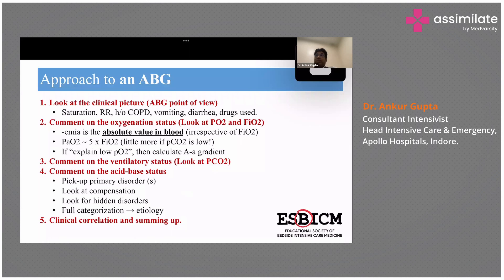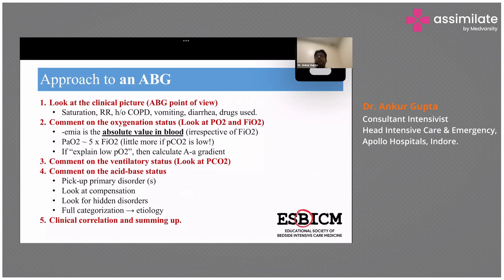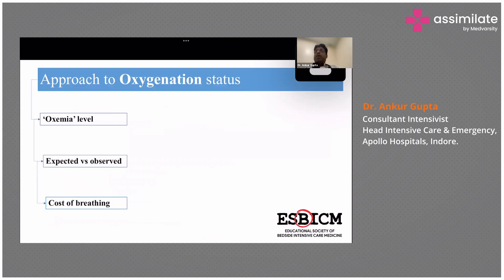Now the steps: whenever you receive an ABG you should always check the validity first. Most machines in our ICU are well calibrated, so 90 to 98 percent of blood gases are valid enough to interpret. The second point is you should comment on the oxygen status, because if oxygen is not there the patient can't survive. Third, look at the ventilator status. After that, comment on the acid-base status. In the final step, compile and correlate all the data and come up with the conclusion.